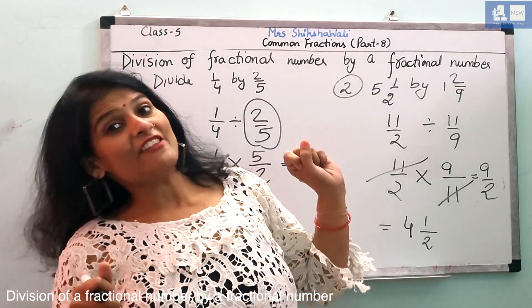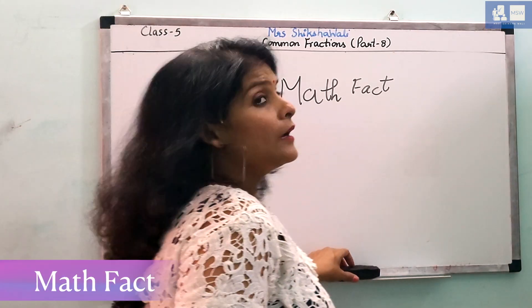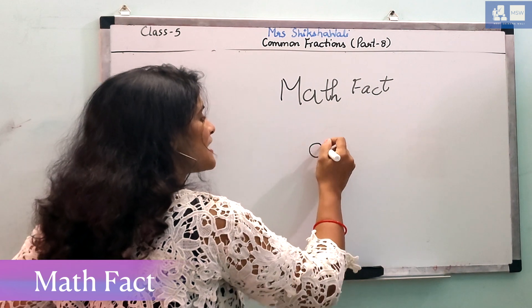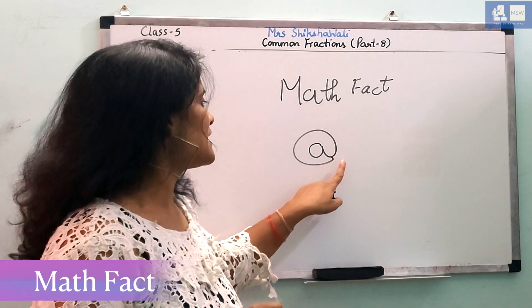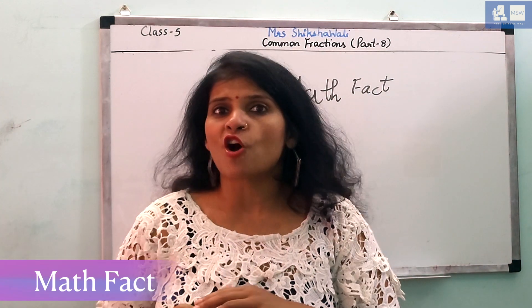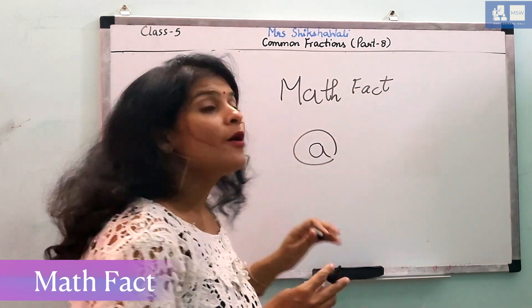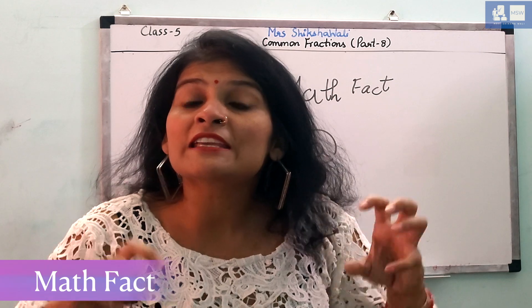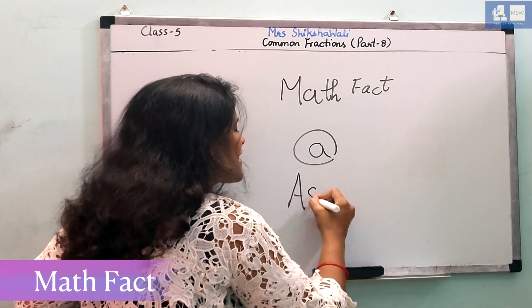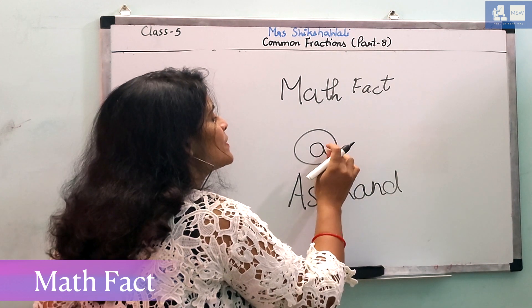Now, today's Math Fact is you will have written this symbol in a lot of places. Gmail at the rate, Gmail.com at the rate, Yahoo.com at the rate. At the rate you say it is at the rate, but what does this symbol have a mathematical name? What does this name mean? Asperand. Asperand. This symbol.